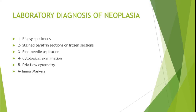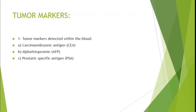Tumor markers include a large diagnostic panel. Key examples: carcinoembryonic antigen (CEA) is common in GIT tumors and can also differentiate smokers from non-smokers regarding lung cancer risk. Alpha-fetoprotein (AFP) is specific to hepatocellular carcinoma and some ovarian tumors. Prostate-specific antigen (PSA) is specific to prostatic tumors.